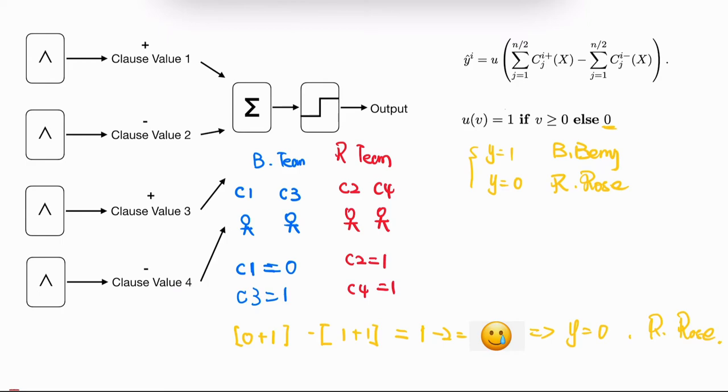So this is one scenario. Imagine another scenario. If both of the blue team says, we want blueberry. And miraculously, the red team says, we don't want red rose at all. So the result will be very easy to calculate, which is 1 plus 1 minus 0 equals 2. So in this round, we will choose blueberry.